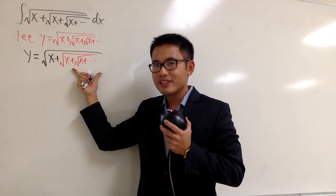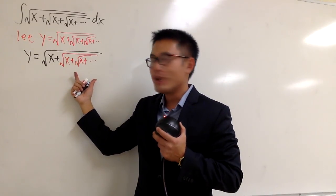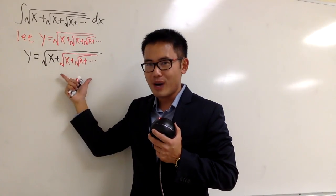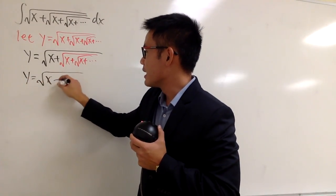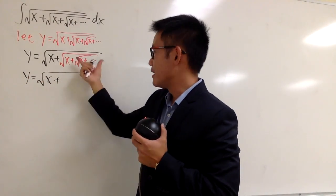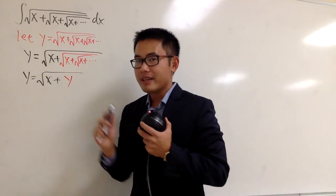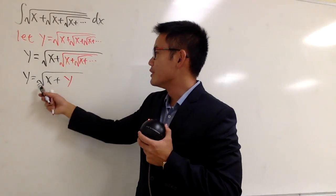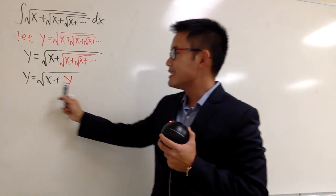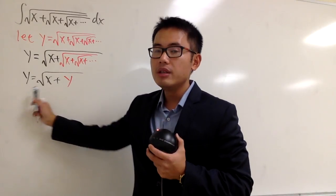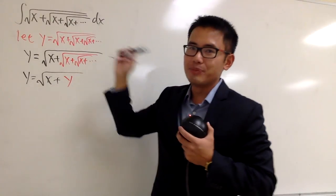If you look at the red part, we actually have y in red. We have a y inside of a y. So in here, y equals square root of x plus all this in black, but the rest we can put down as y right here. So the connection is: y is equal to square root of x plus y. And if I can somehow isolate y from this equation in terms of just x, then we can find the closed form of this expression.